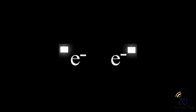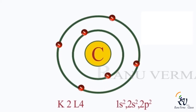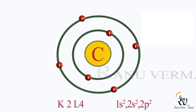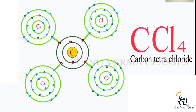Let's look at another example of a covalent bond. Carbon has 4 valence electrons and shares with 4 chlorine atoms to form CCl4. After sharing, you can count that carbon has 8 electrons and each chlorine atom also has 8 electrons in its valence shell.